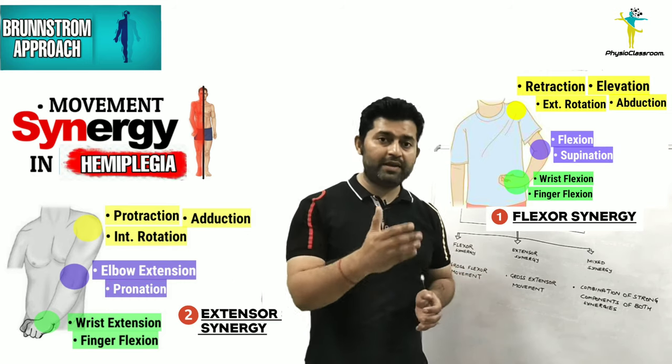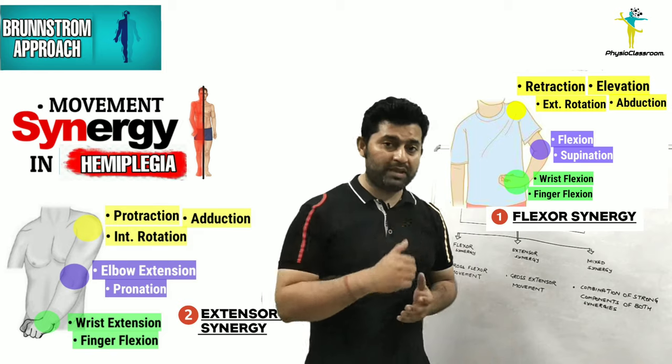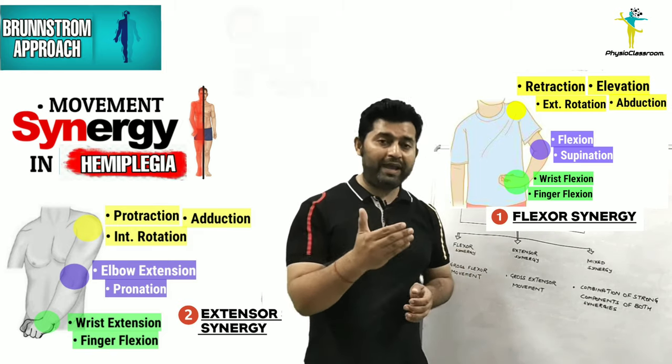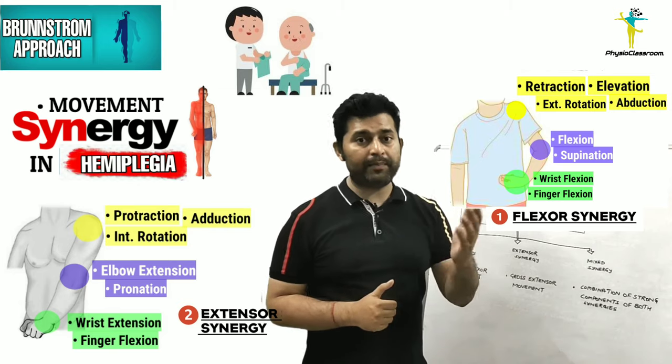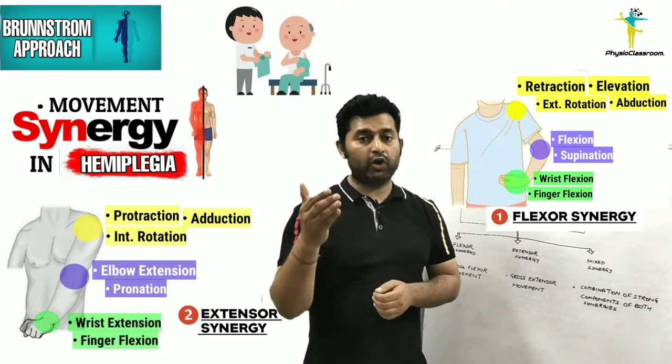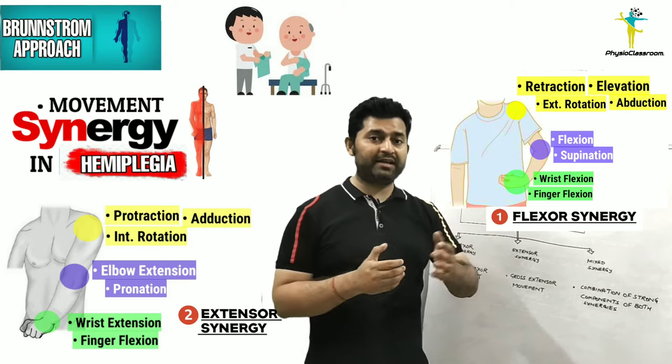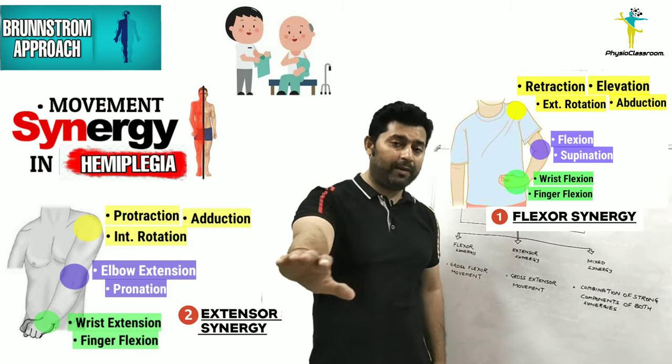This information is important because it helps explain why certain movements are easily producible and others are difficult for the stroke patient. A stroke patient finds it difficult to extend the elbow, to abduct the shoulder, and to supinate — because these are the weaker components of the flexor and extensor synergy patterns.